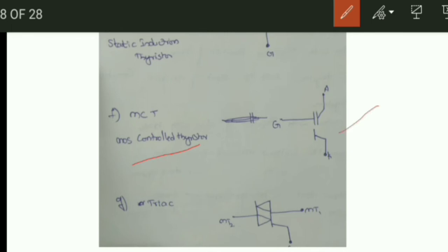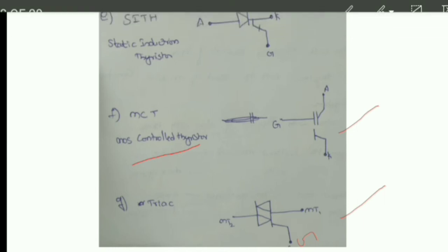Next is the TRIAC. You can observe it has terminals MT1, MT2, and a gate. MT1 and MT2 are the main terminals, and the gate is used for triggering. We will see these devices in depth later.